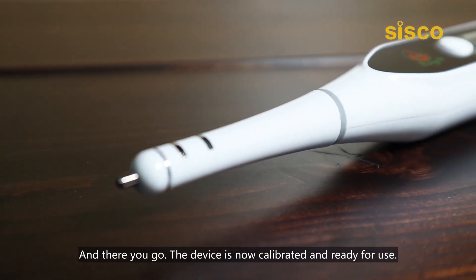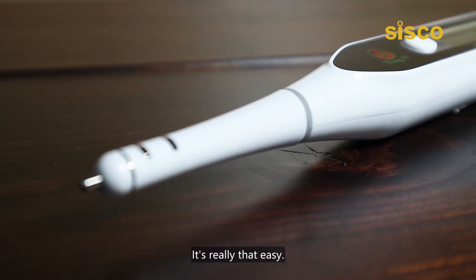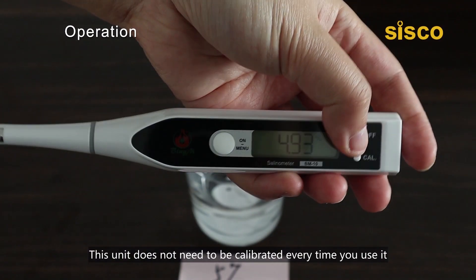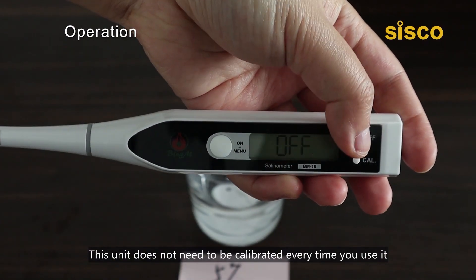The device is now calibrated and ready for use. It's really that easy. Before you go ahead and test your salinity, remember to rinse the tip with purified water and dry. This unit does not need to be calibrated every time you use it, as the pen resets itself to zero every time you turn on the unit.